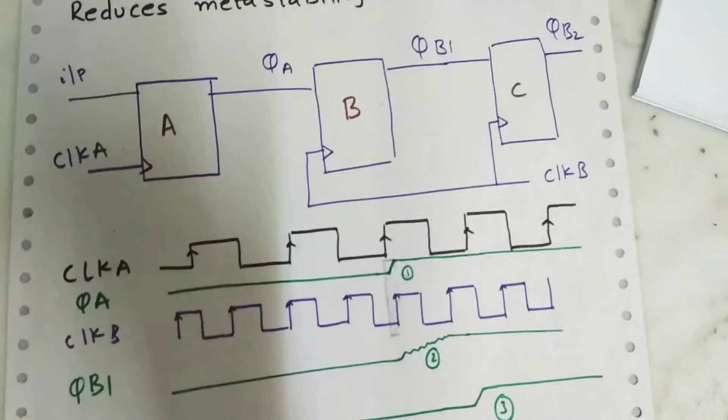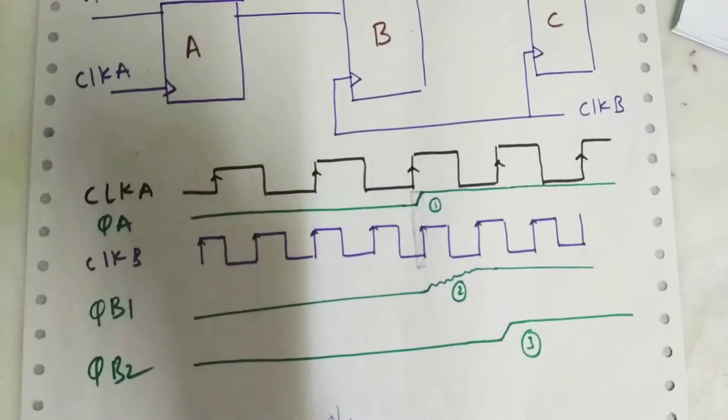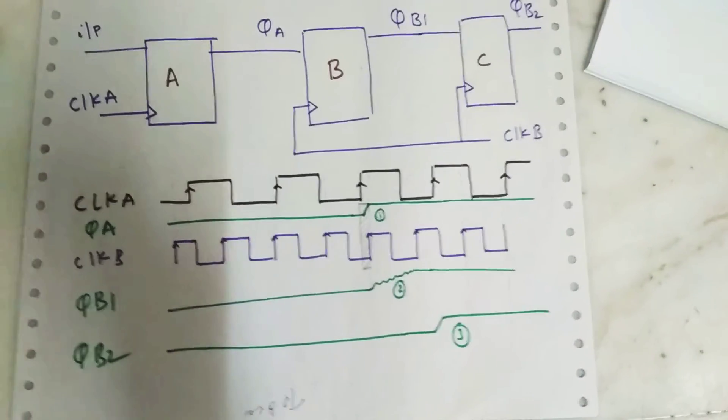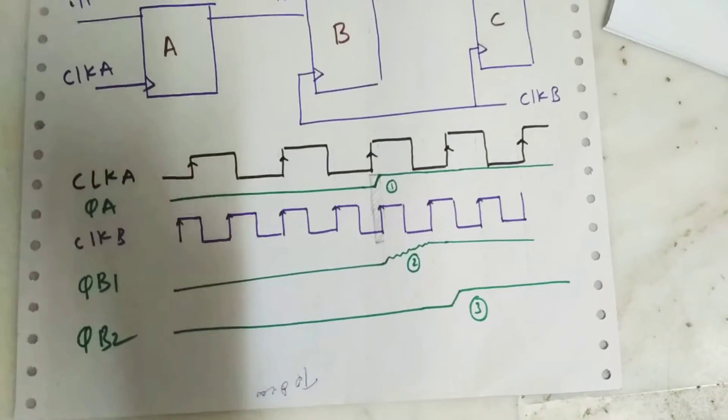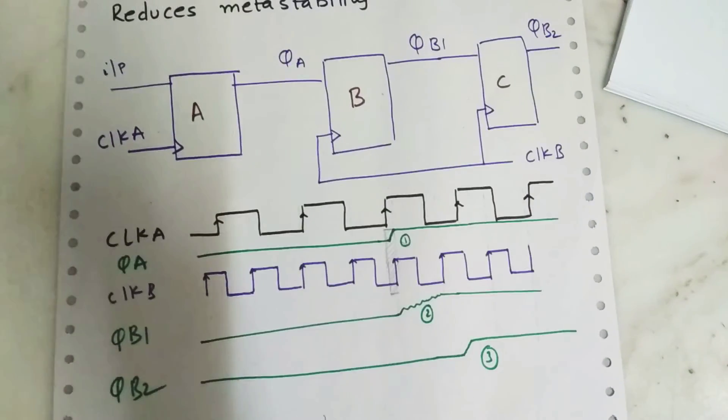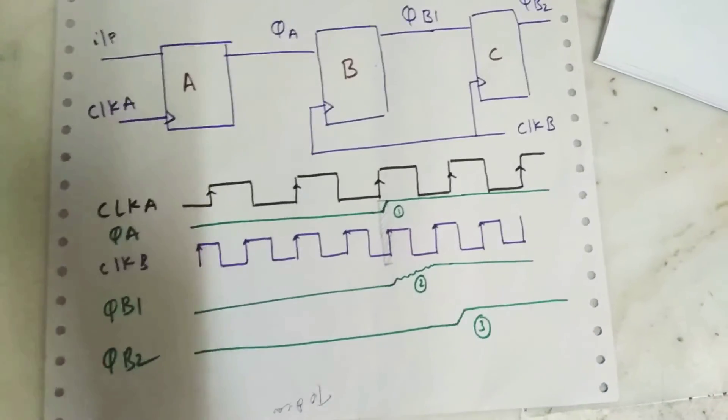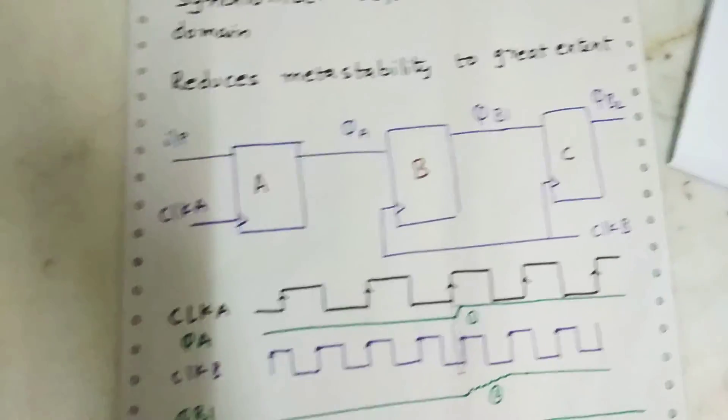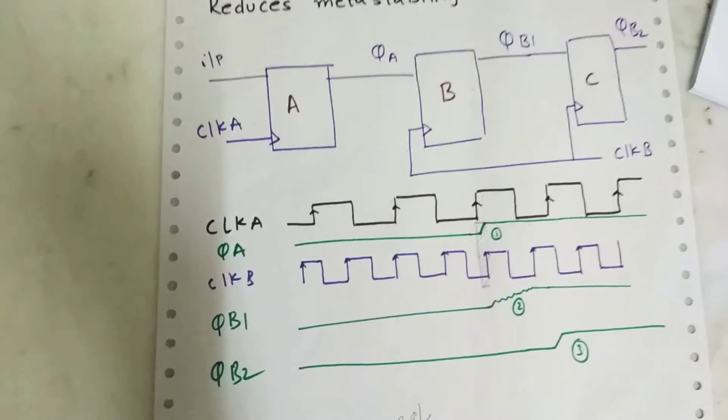And we are taking that output in another flop at QB2. So the output is settled and we are getting the exact output required. A two-flop synchronizer is reducing this metastability condition and it reduces to a great extent so that we won't have any problems in the design.